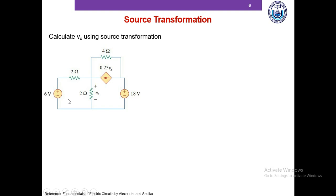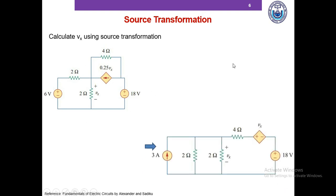If we perform mesh analysis, we have three meshes and between two of them there is a super mesh, which makes the procedure lengthy, though still doable. This problem is also solvable using source transformation, which will simplify things considerably.